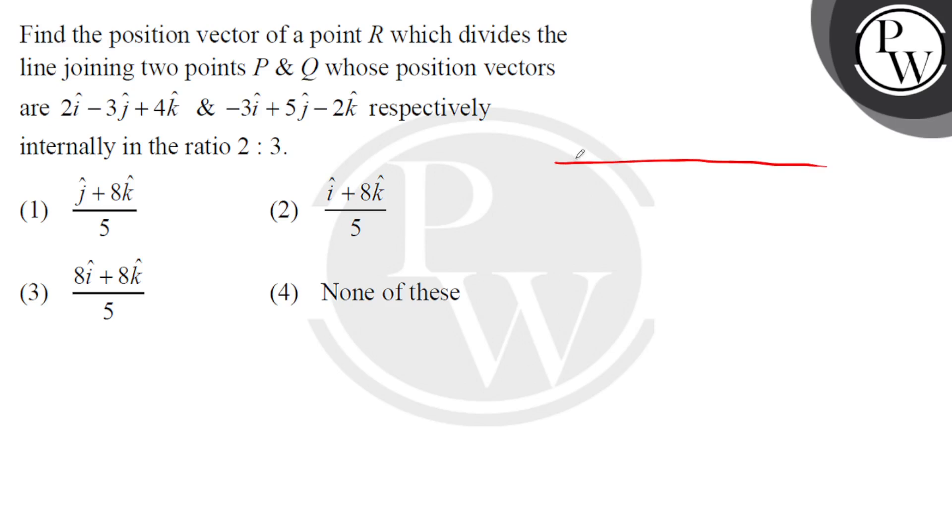So basically here we have, let's say point P with coordinates 2, minus 3 and 4, and point Q with coordinates minus 3, 5 and minus 2.